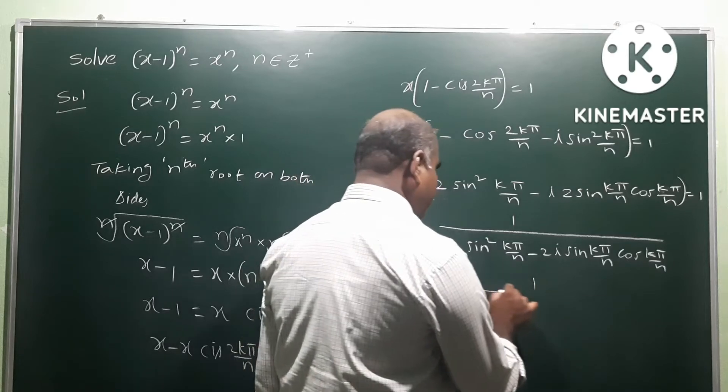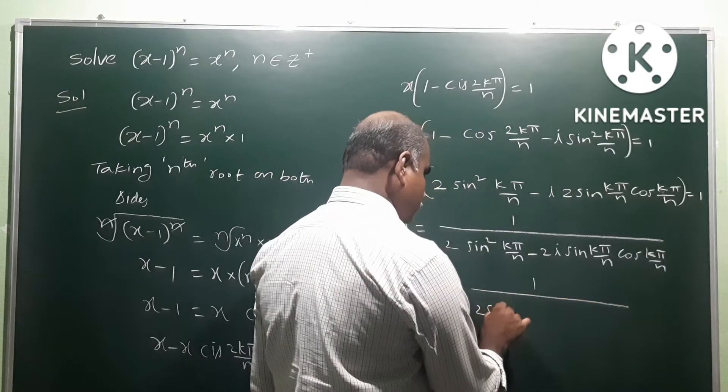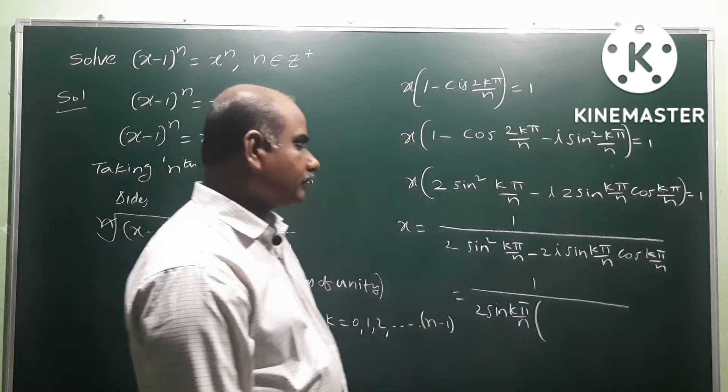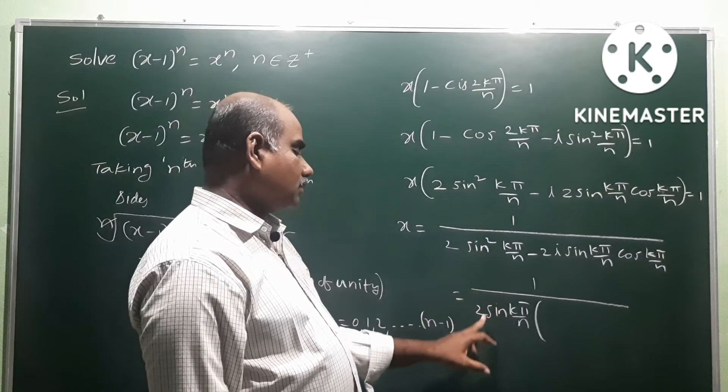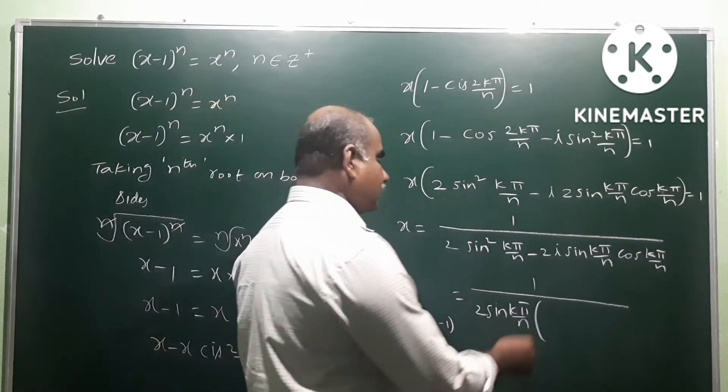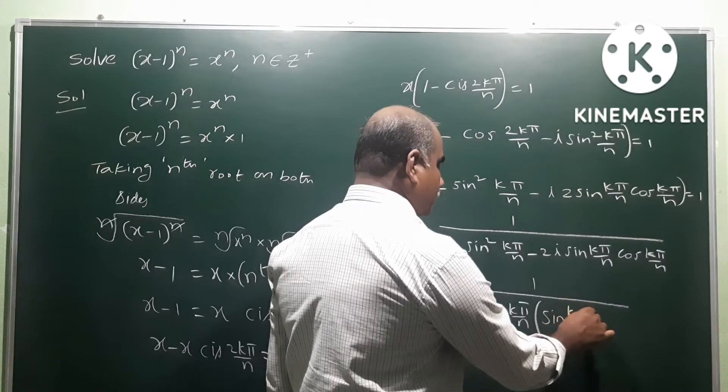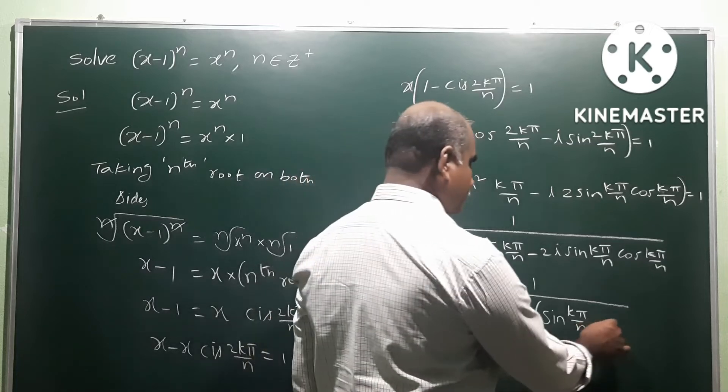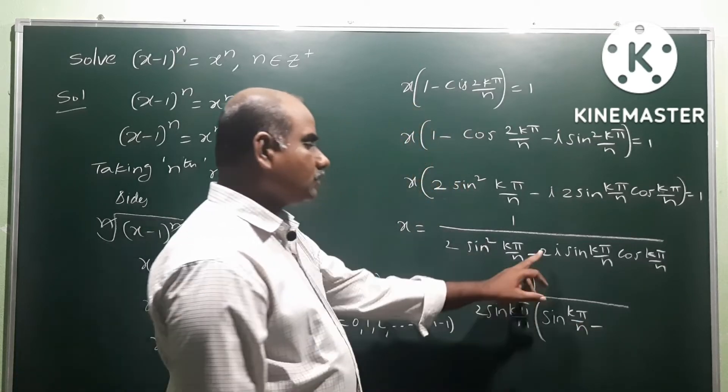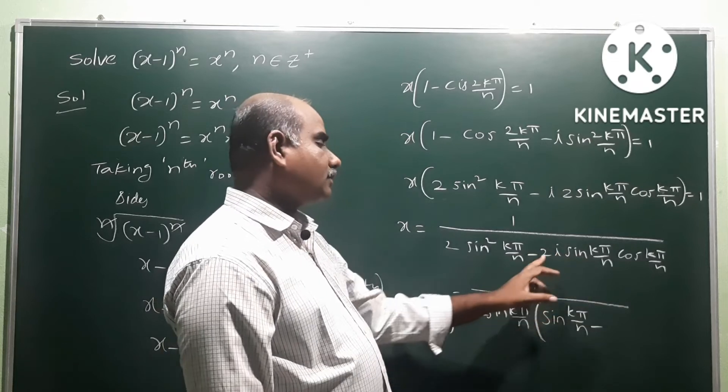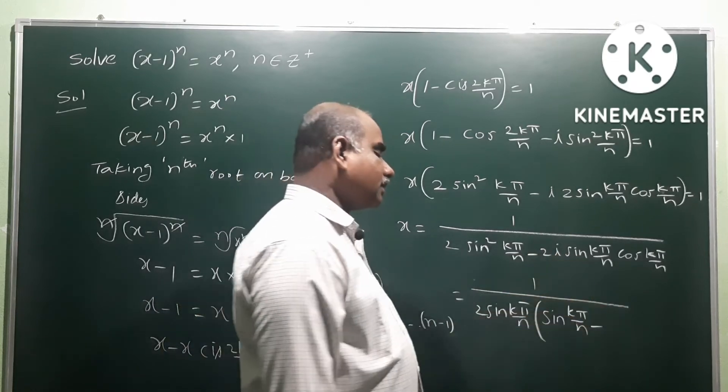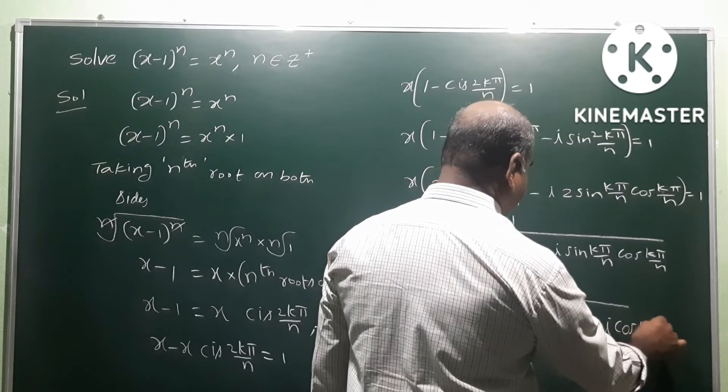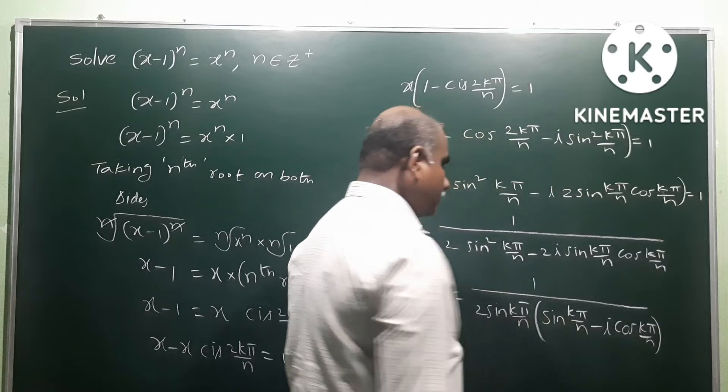Taking 2sin(kπ/n) common from the denominator: 2sin(kπ/n) times (sin(kπ/n) - i·cos(kπ/n)). This remaining part has i·cos(kπ/n).